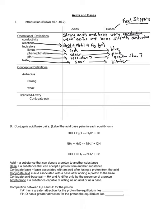Acids react with some metals, and when they do, they produce hydrogen gas. Not all metals react with acids, but many of them do. Group 1 and Group 2 metals react with acids. It is until you get to the D and P block that some of the metals are unreactive to acids.